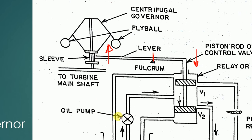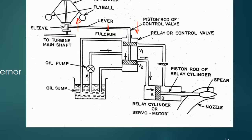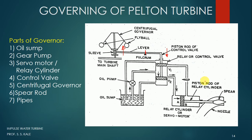So we can achieve the required function: because the speed increased, the lever moved up on one side and down on the other, which caused the spear to be inserted into the nozzle. The water amount reduces, and hence the speed of the turbine also reduces back toward the set point.